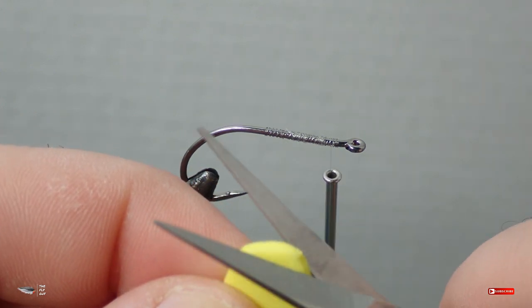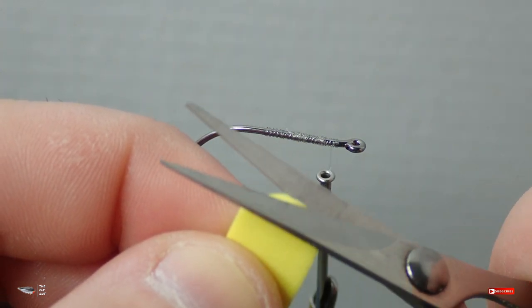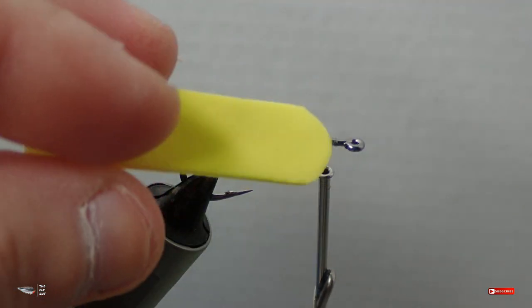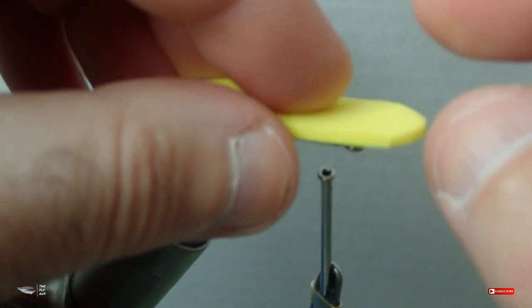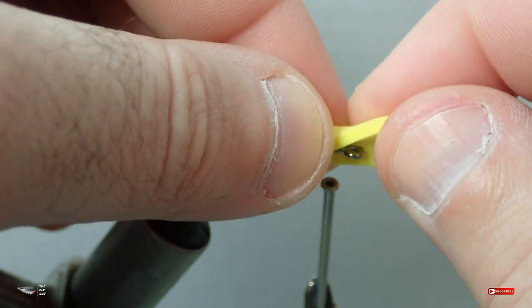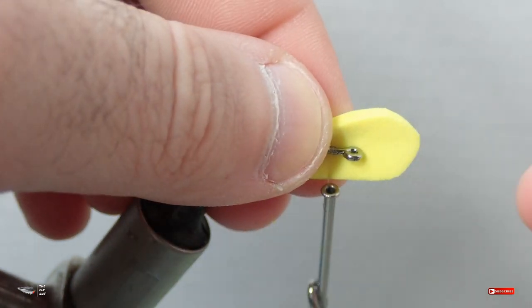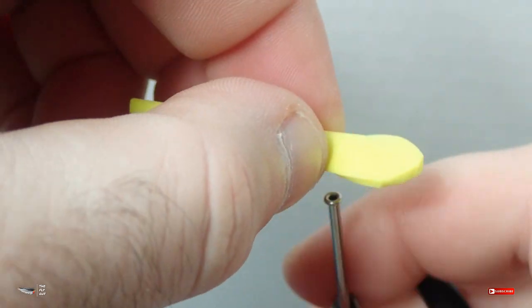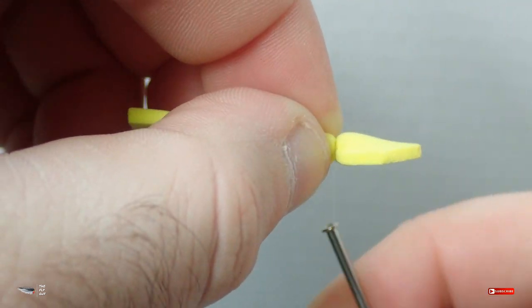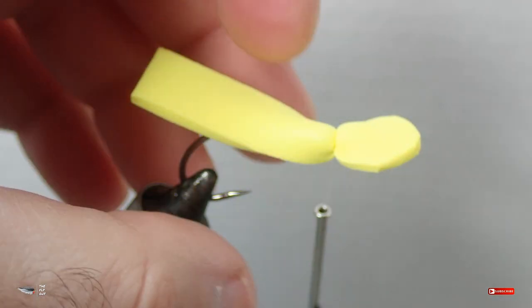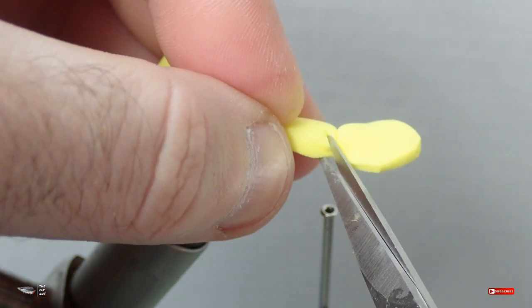You will start by taking your scissors and just rounding the end of one of those strips. Based on what color of popper you're using will determine what color of foam you use, but in this one I'm going to be using yellow, brown, and tan craft foam.